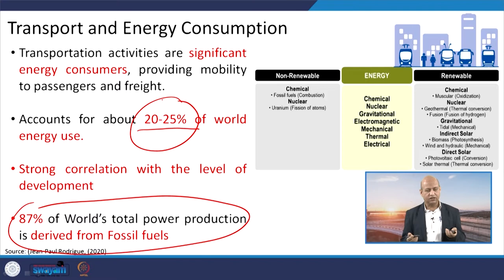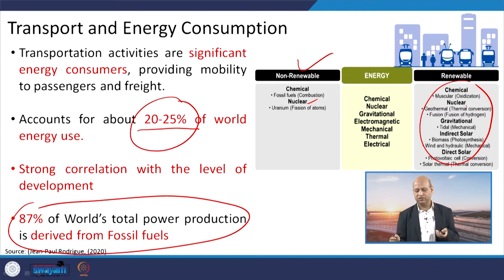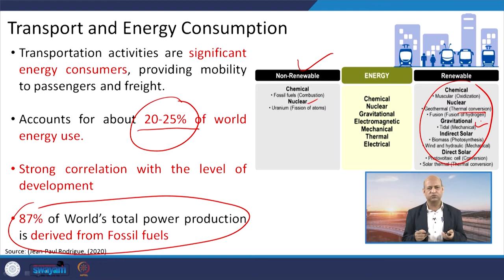Energy can come from non-renewable sources such as chemical or nuclear, or from renewable sources like muscular energy, geothermal, thermal conversion, gravitational (converting potential to kinetic energy), and solar energy. The share of renewables is very less at present, but many policies favor them, and in the future we may use much more renewable energy compared to fossil fuels. At present, however, fossil fuels dominate the energy landscape.